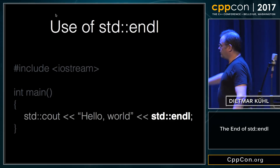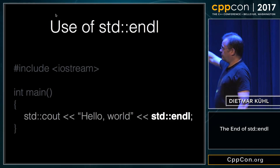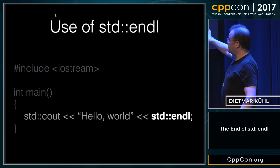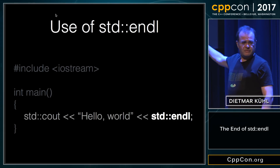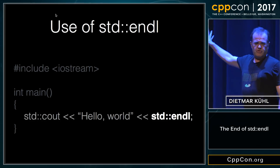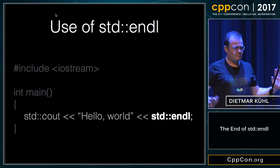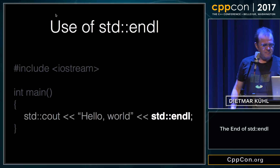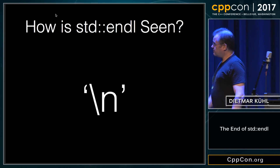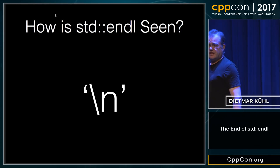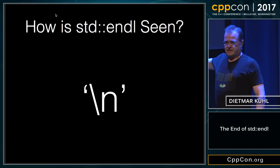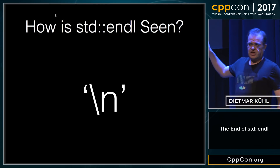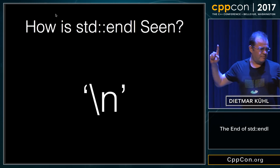So everybody knows how to use it — stood out, endl, that's great. Actually, that is not really the biggest problem because cout is not buffered as much. But what people normally see is when you write endl, it's a new line. It kind of is a new line, but it actually happens to be slightly more.